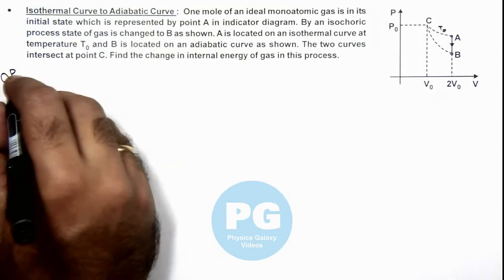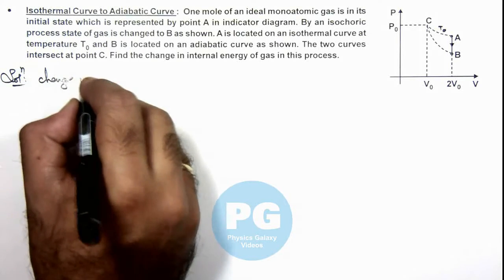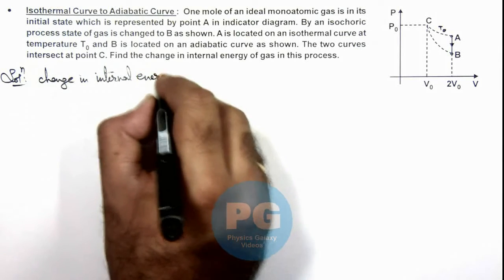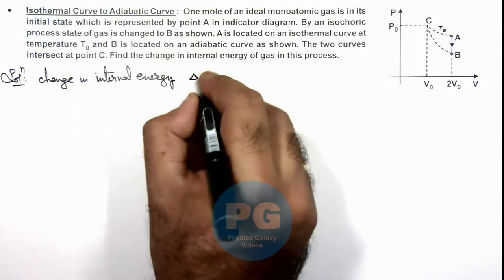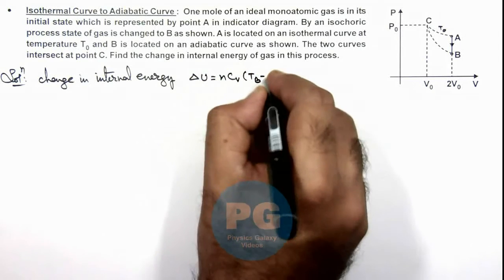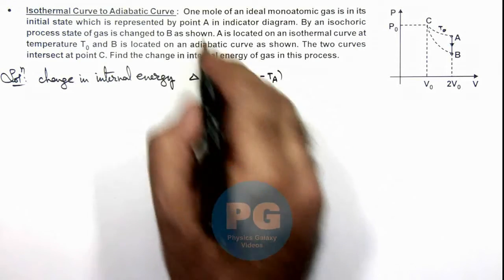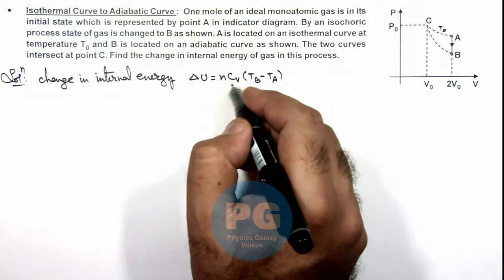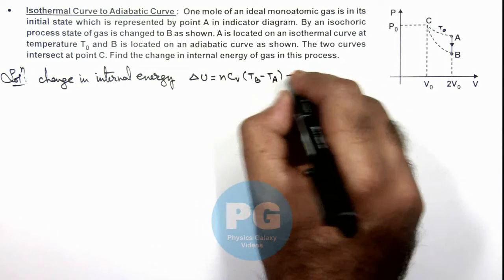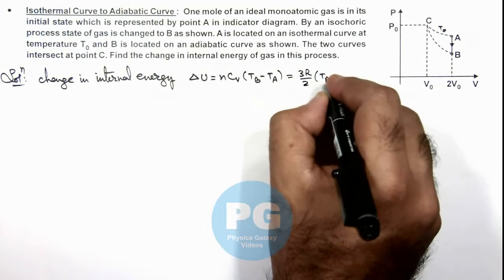So here we can directly write the change in internal energy as ΔU, which is n·Cv·(TB - TA). Here, the value of n is 1 (one mole is given), and for a monoatomic gas, Cv we can take as 3R/2. So this value is 3R/2 multiplied by TB minus TA.